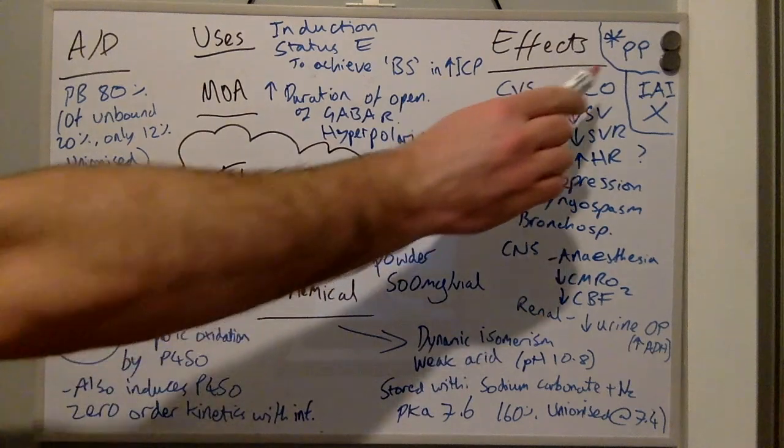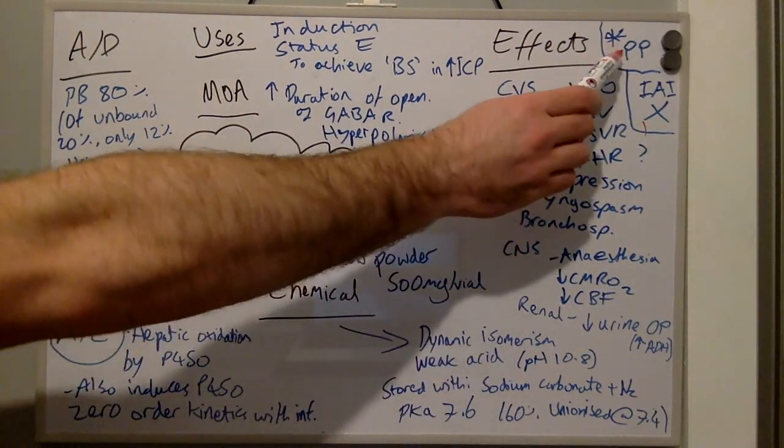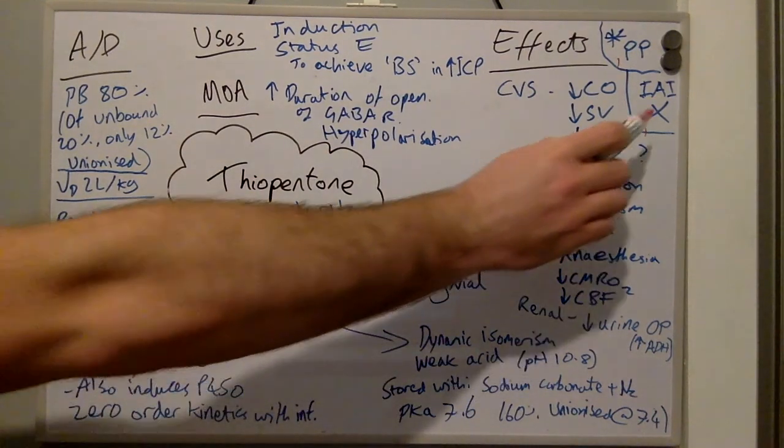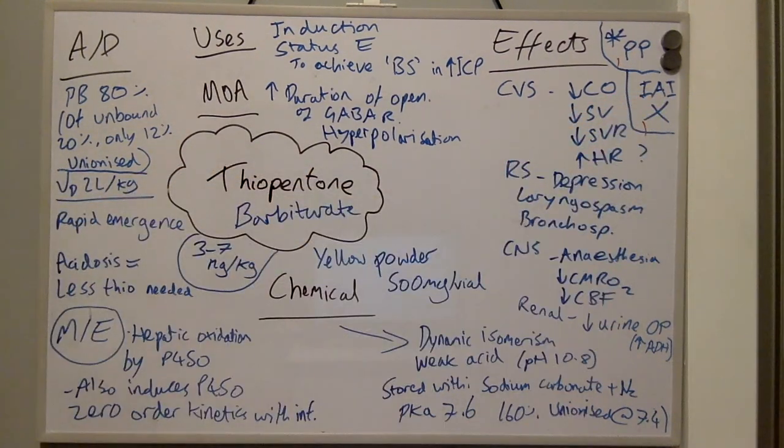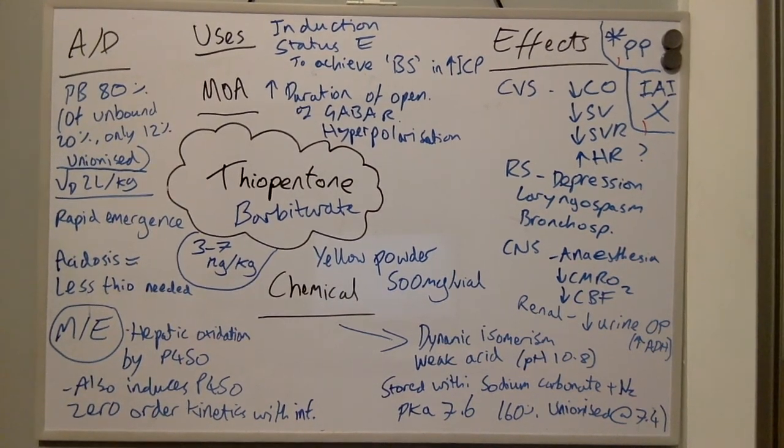Two points worth noting: It can precipitate porphyria, so it should be avoided in these patients. An inadvertent arterial injection can cause digit necrosis and will need to be treated urgently. Thank you for watching.